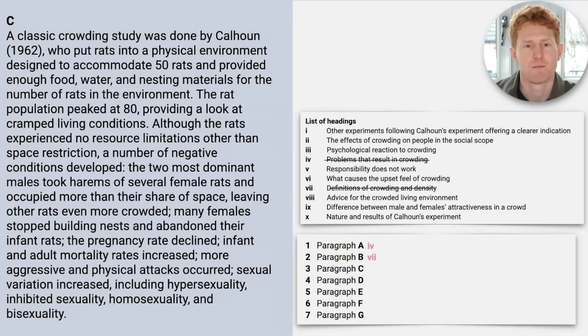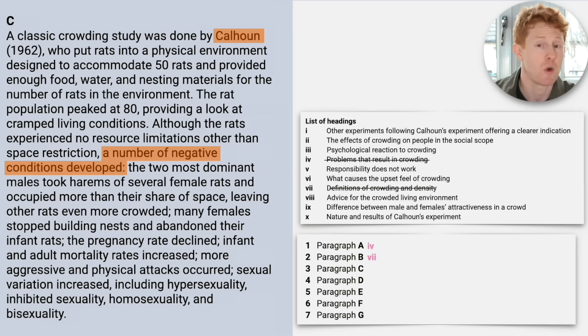Okay, C. Pause the video, choose the correct answer, and then we'll look through together. Okay, here is where the answer is. In this case, it's slightly in the first sentence, but mainly in the middle. So it's not always in the first and last sentence. The correct answer is... I hope you've gone through the list and you've chosen which one you think it is. It's ten. Nature and result of Calhoun's experiment. So you'll have noticed from the word Calhoun that it could possibly be number one, or it could be number ten. In this case, it's ten.